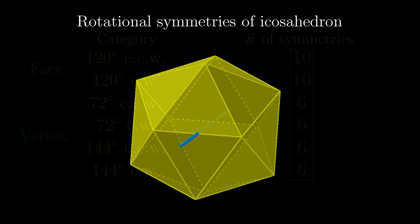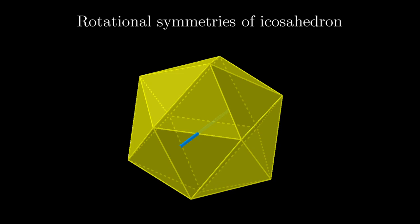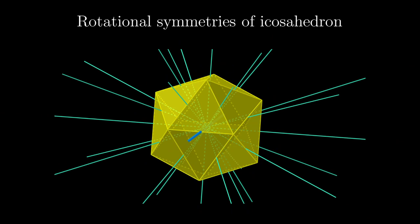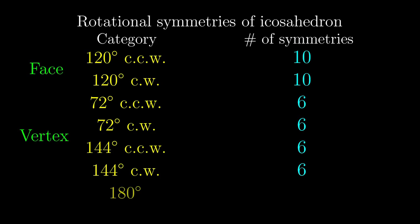These don't quite add up to 60, and this is because we are missing a big category of symmetries. These are 180 degree rotations around an edge. In fact, there are 15 different axes like that, and so again, we can very happily crush these 15 symmetries into a single category.